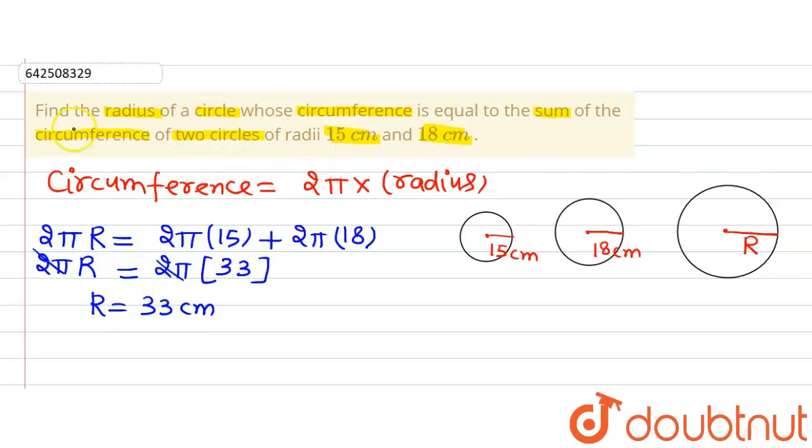So that's what we were asked in the question, to find out the radius of the circle. The radius of the circle is 33 cm. That's all. Thank you.